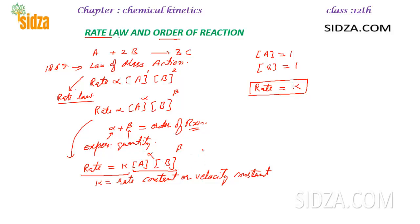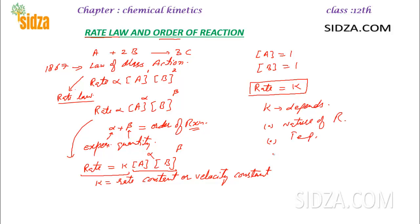The value of rate constant K determines the rate of a reaction when the concentration of each reactant is taken as one. K depends on the nature of the reaction, the temperature, and the catalyst.